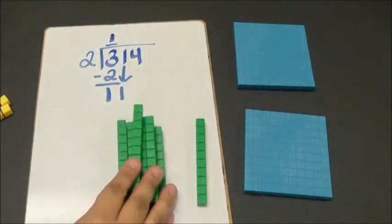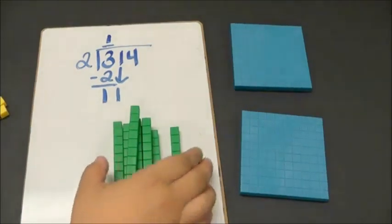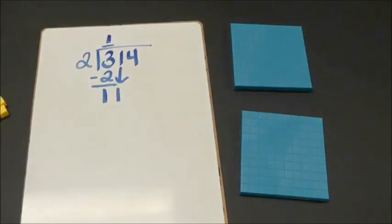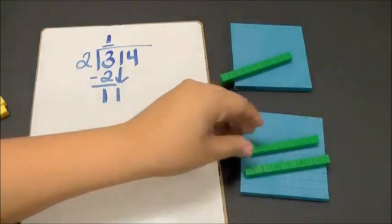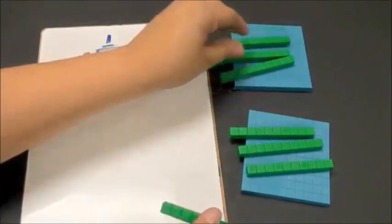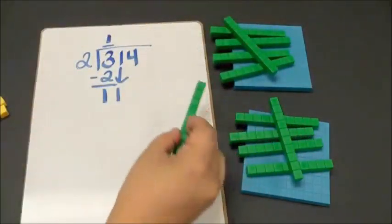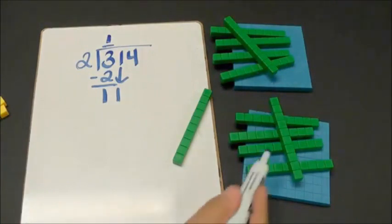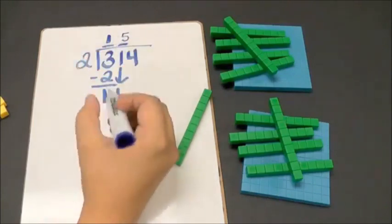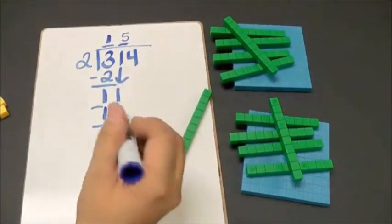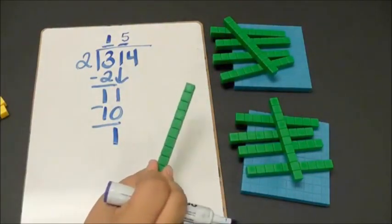Now I have 11 tens. Now I'm going to divide my 11 tens. Each group has 5 tens. 5 times 2 is 10 — 5 tens. When I subtract, I have 1 ten left over.